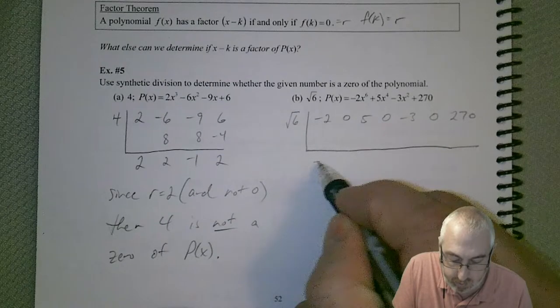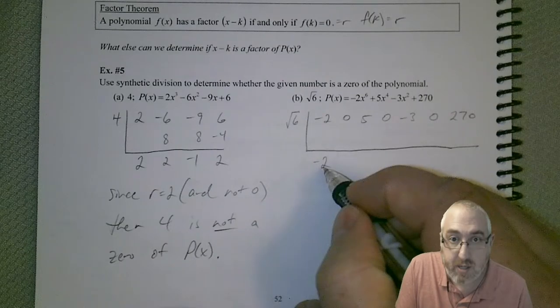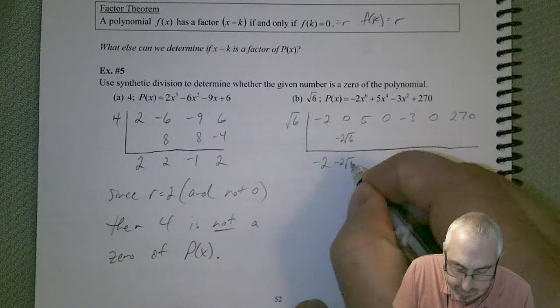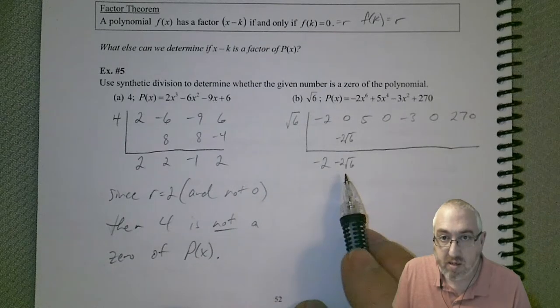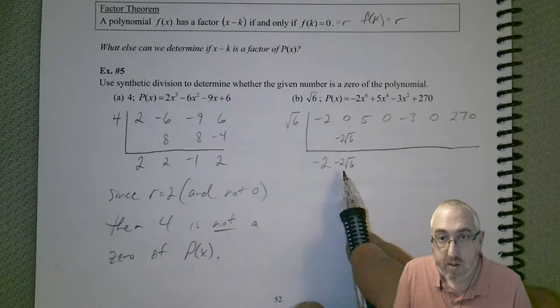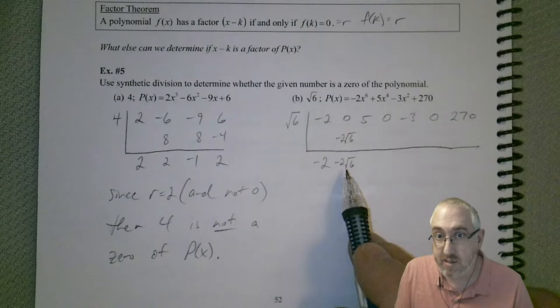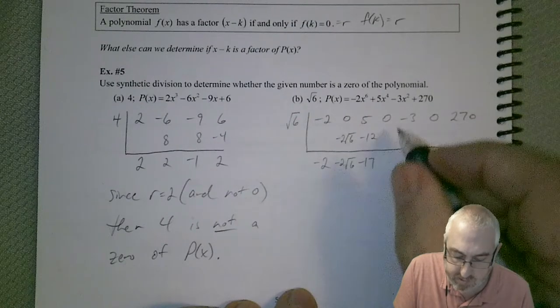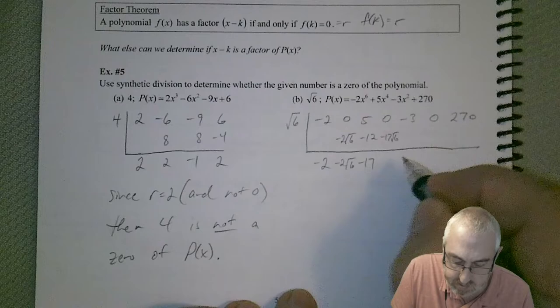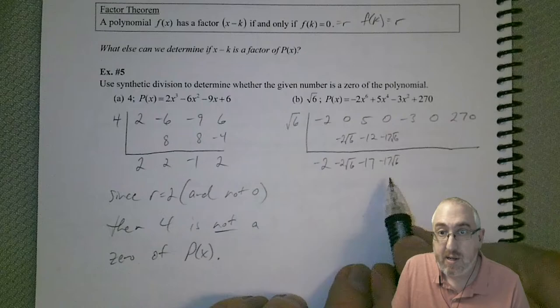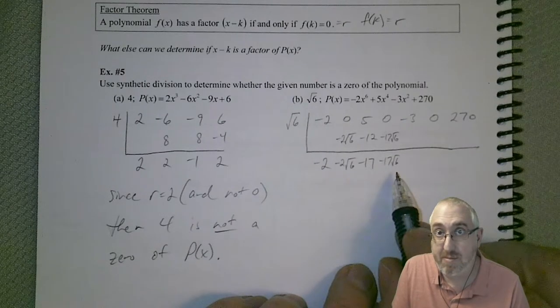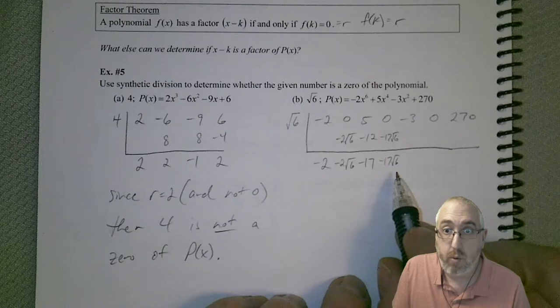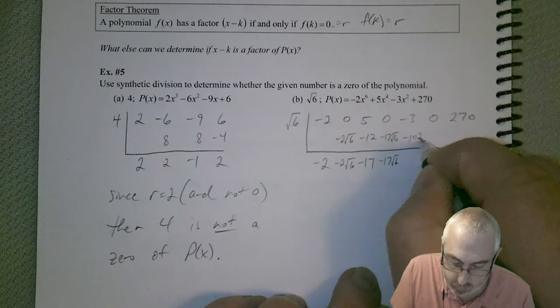So bring down our negative 2. So negative 2 times the square root of 6 is negative 2√6. Add that, and we get negative 2√6. Now we've got to multiply again. So the 2 square roots of 6 will combine to make a 6 times the negative 2, which is negative 12. So that's a negative 17. Times the square root of 6, negative 17√6. Multiply again. So now we've got negative 17 times 6. So what's that equal to? Okay, 102, looks like. So a negative 102, so negative 105.